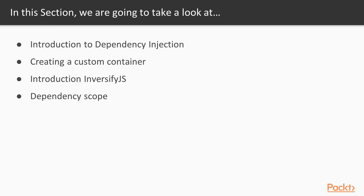In the next video we will create a custom DI container by ourselves. You will then learn about decorators and how we can take advantage of their core strengths to improve our container's functionality. After grasping the inner workings of a container, we will move on to a thoroughly tested open source DI container called Inversify.js, and test dependency scopes like Singleton and Transient.